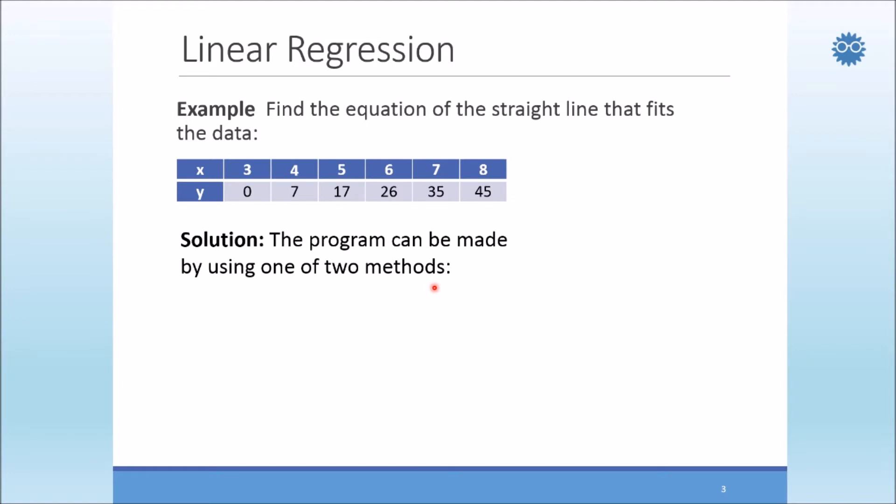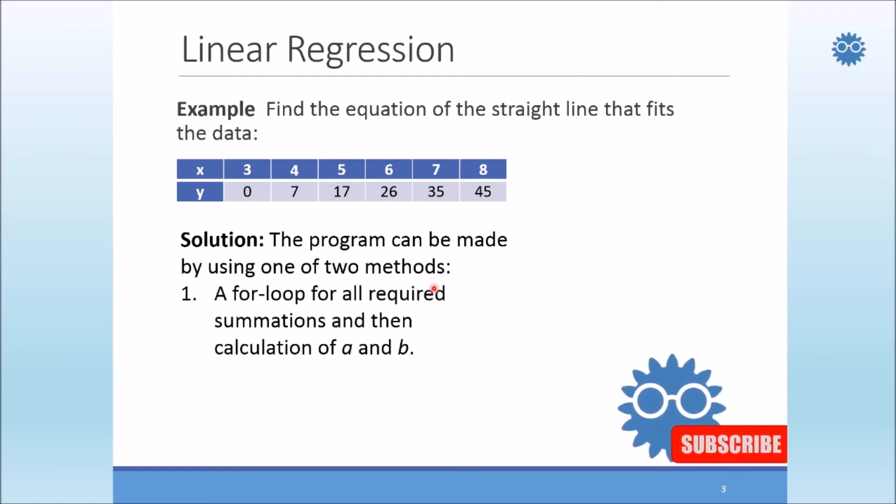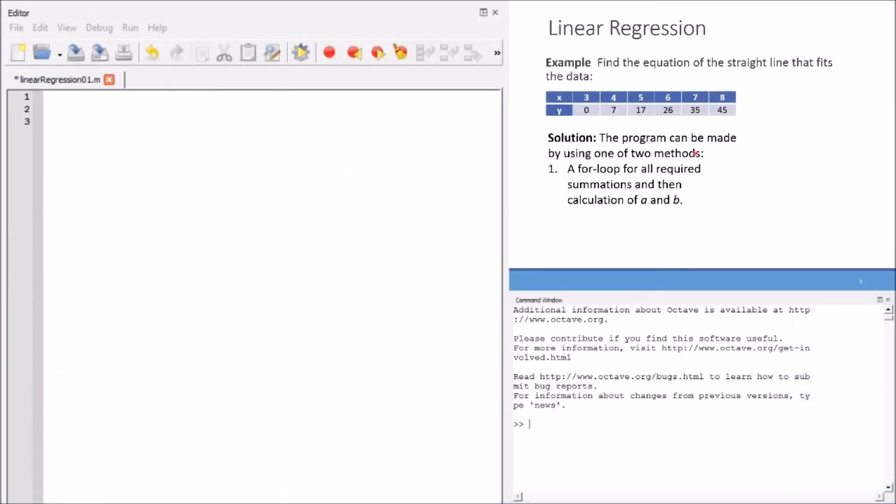Now, let's solve this example using the code. We'll try to make a MATLAB Octave code using two methods. The first method is using the traditional for loop for the summations and averages. Let's go to the editor and see how we can do this using the conventional for loop.